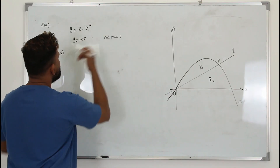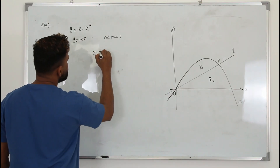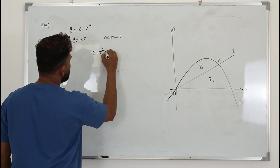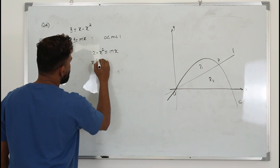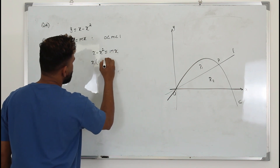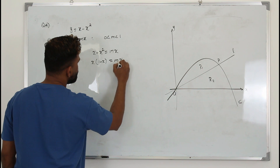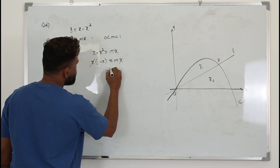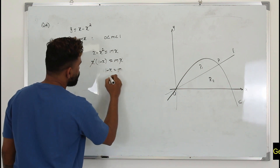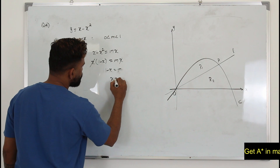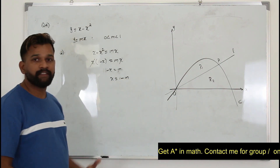When we equate these two functions x minus x squared equals mx, take x as a common factor: one minus x equals m, so rearranging gives x equals one minus m.